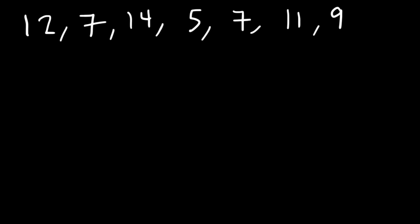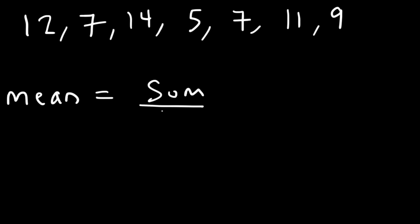So how can we calculate the mean of this data set? To find the mean, which is basically the average of the seven numbers, you need to take the sum of the seven numbers and divide it by the count of numbers, which is 7. And so that's how you can calculate the average, or the arithmetic mean.